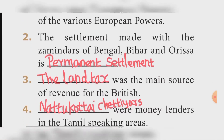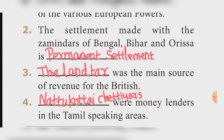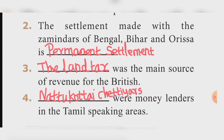Fill in the blanks, question two: The settlement made with the Zamindars of Bengal, Bihar, and Orissa is known as the Permanent Settlement.